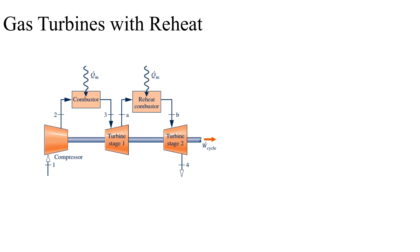Looking at the schematic, the change you would notice is that instead of a single-stage turbine we've got a two-stage turbine, and instead of a single combustion chamber we've got a reheat combustion chamber as well. That means we are adding heat content twice instead of just once as we did previously.